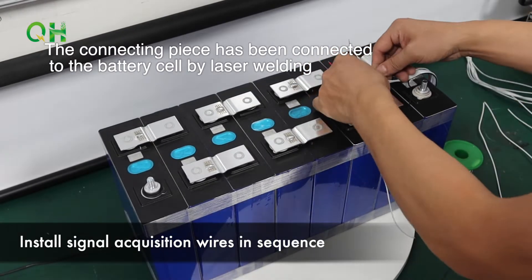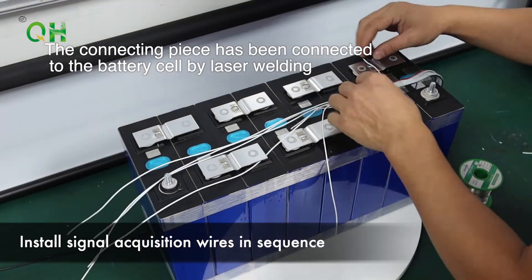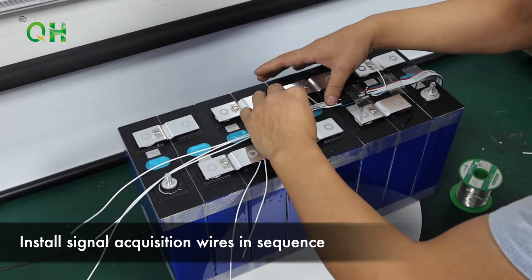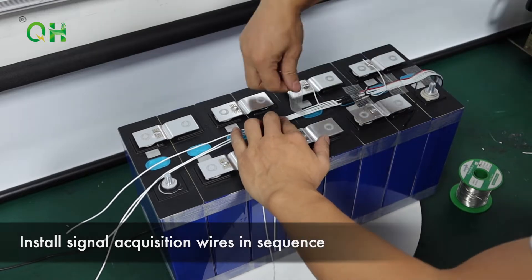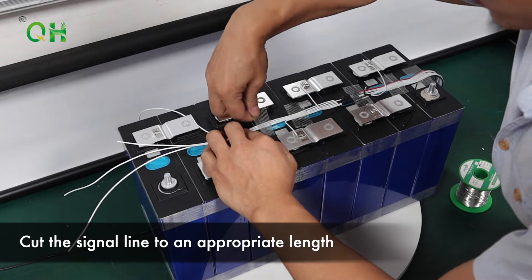Install signal acquisition wires in sequence. Cut the signal line to an appropriate length.